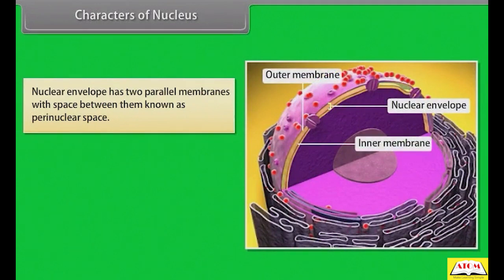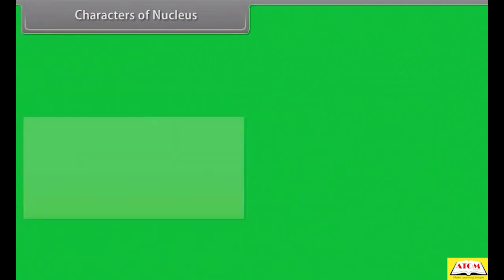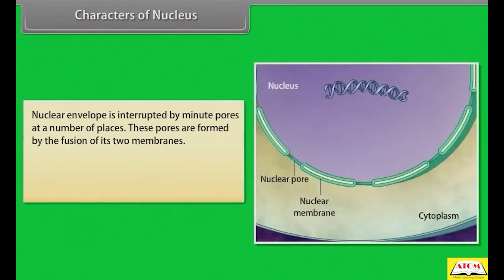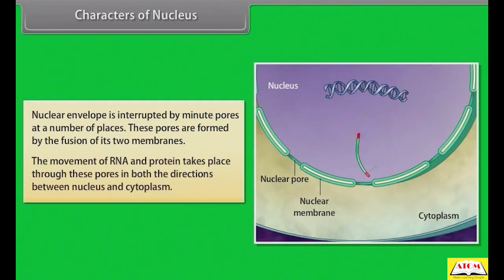The nucleus contains nuclear matrix and one or more spherical bodies called nucleoli. The nuclear envelope has two parallel membranes with a space between them known as the perinuclear space. The outer membrane is usually continuous with the endoplasmic reticulum and has ribosomes on it. The nuclear envelope is interrupted by minute pores at a number of places, formed by the fusion of its two membranes. The movement of RNA and protein takes place through these pores in both directions between the nucleus and the cytoplasm.